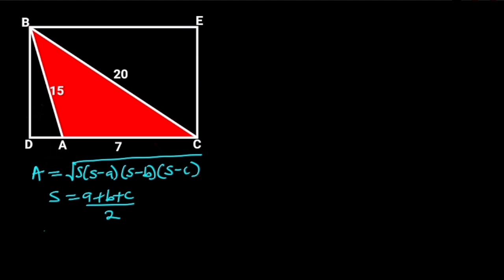To find S, S is equal to 7 plus 15 plus 20 all divided by 2. 7 plus 15 plus 20 is equal to 42. So we have 42 divided by 2, which is 21.